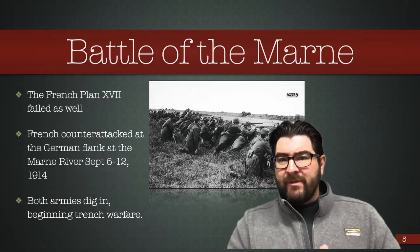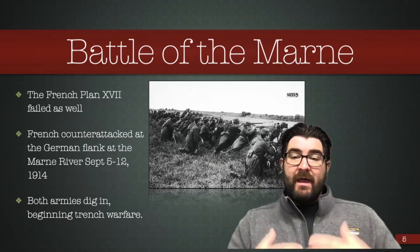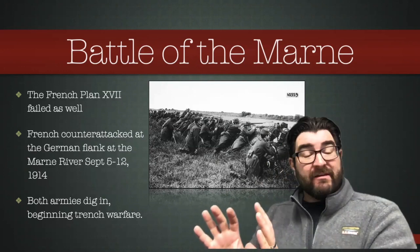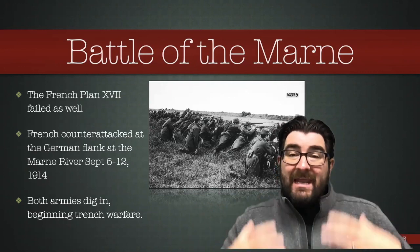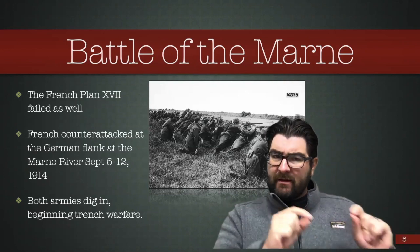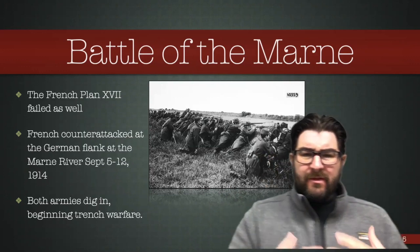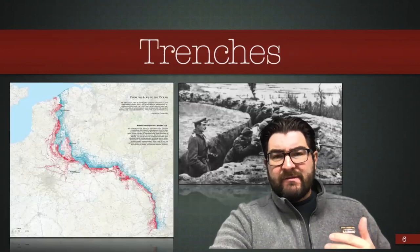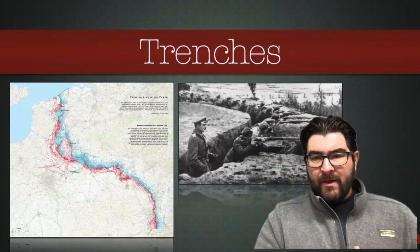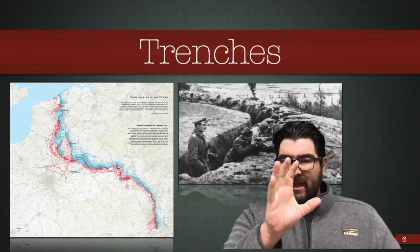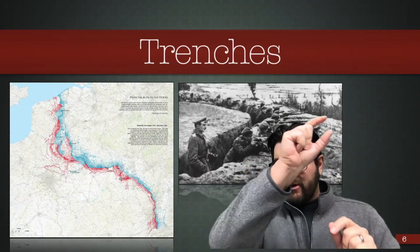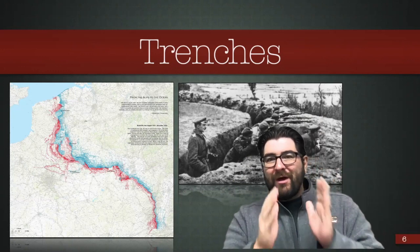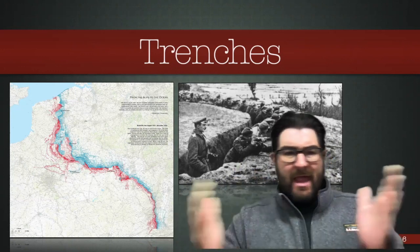The French counterattacked the German advance, with the biggest battle taking place at the River Marne. Note that the French Plan 17 — the advance into Germany through Alsace and Lorraine — also failed. Any movement was hard because defensive weapons, particularly machine guns, were too formidable. The French counterattacked at the German right flank and ultimately stopped the advance. Both armies dug in, beginning a long period of trench warfare. A line of British, French, Belgian, and German trenches stretched from the English Channel all the way to the Alps, and those lines became the Western Front for the duration of the war.